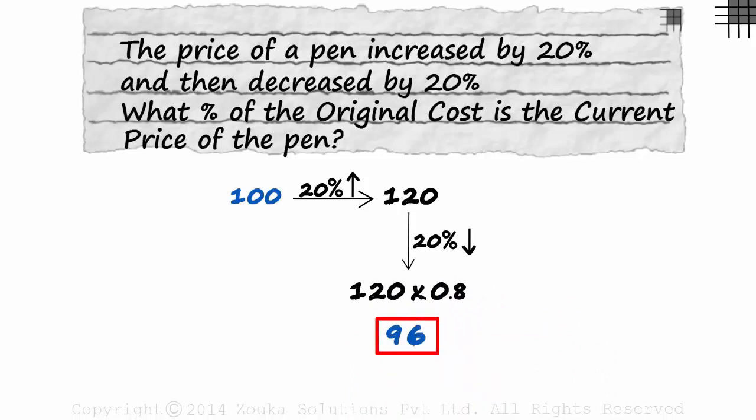This is the current price. But this is not what we are asked for. We have been asked what percentage of the original cost is the current price. It will be 96 over 100 times 100 which is 96%. The current price is 96% of the original cost.